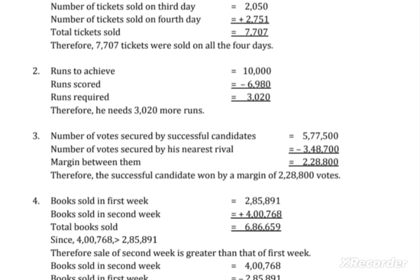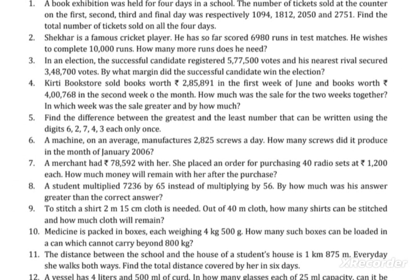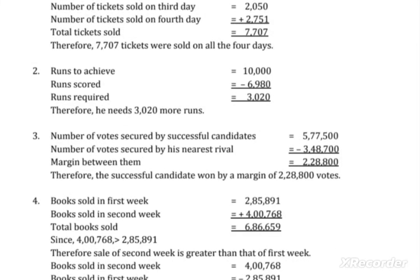I am using a marker to explain this clearly. When you add both weeks together, you will get 686,659. For the total sale for the two weeks, you add both amounts. To find which week had the greater sale, you compare the two values — the second week had the greater sale — and subtract to find the difference.